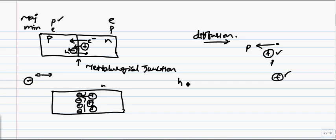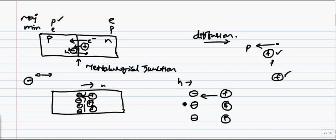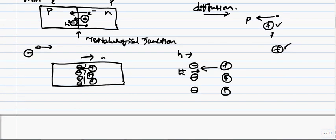Instead of getting confused between electrons flowing and holes flowing, let us stick to a notation of holes flowing. Holes are flowing from the P-side to the N-side. If we look at this electric field built up from this side to this side, the holes were flowing before, due to which there is an electric field built up. This electric field will oppose further movement of holes into the other side. Similarly, for electrons, it will oppose them as well.